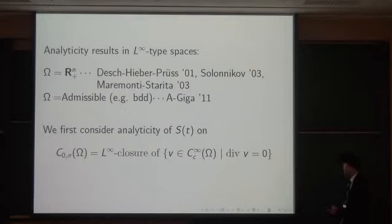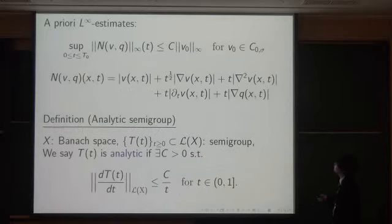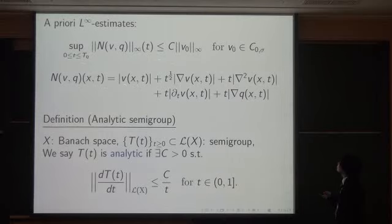Recently, we considered a contradiction argument to prove analyticity for what we call admissible domains — for instance, bounded domains. Let me explain our heuristic idea. We considered an a priori L-infinity estimate. Here is our a priori L-infinity estimate: N denotes a norm of a solution up to second derivatives, including a pressure term. This norm is a scale-invariant norm under parabolic scaling.